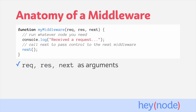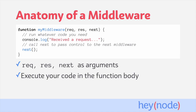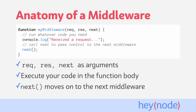Middleware is a function that takes three arguments: req, res, and next. The parameters are the incoming request object, the response object, and a function called next. The middleware executes its code in the function body, using req and res however it needs to. When the middleware has successfully completed whatever work it needed to do, it calls the next function without any arguments.